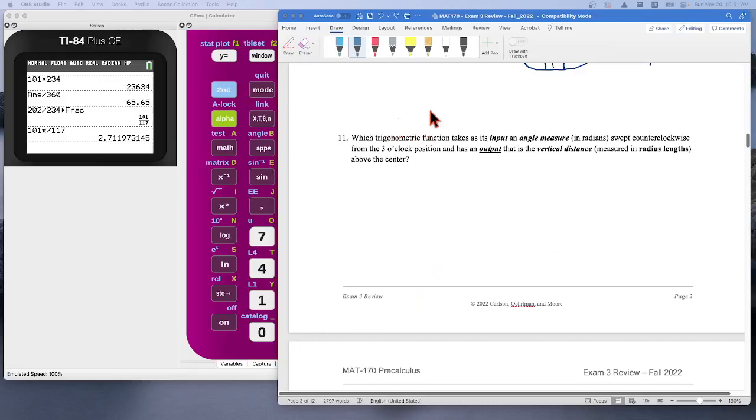For question 11, we're being asked which trigonometric function has an input of the angle measure, theta in radians, sweeping out counterclockwise from the 3 o'clock position.